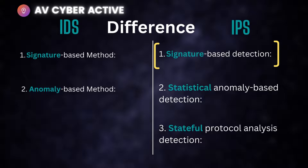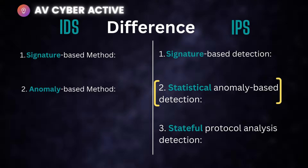IPS also works on a signature basis — your vendor releases signatures, and based on those signatures, intelligence can be drawn on how to stop or prevent traffic from flowing. The next method is statistical anomaly-based detection. Since the IPS is deployed as an inline device, it has the capability to stop traffic. If it sees any traffic that is out of normal or anomalous, it will go ahead and stop it, and you should be logging those events to a centralized SIEM solution to make informed decisions based on what was stopped.